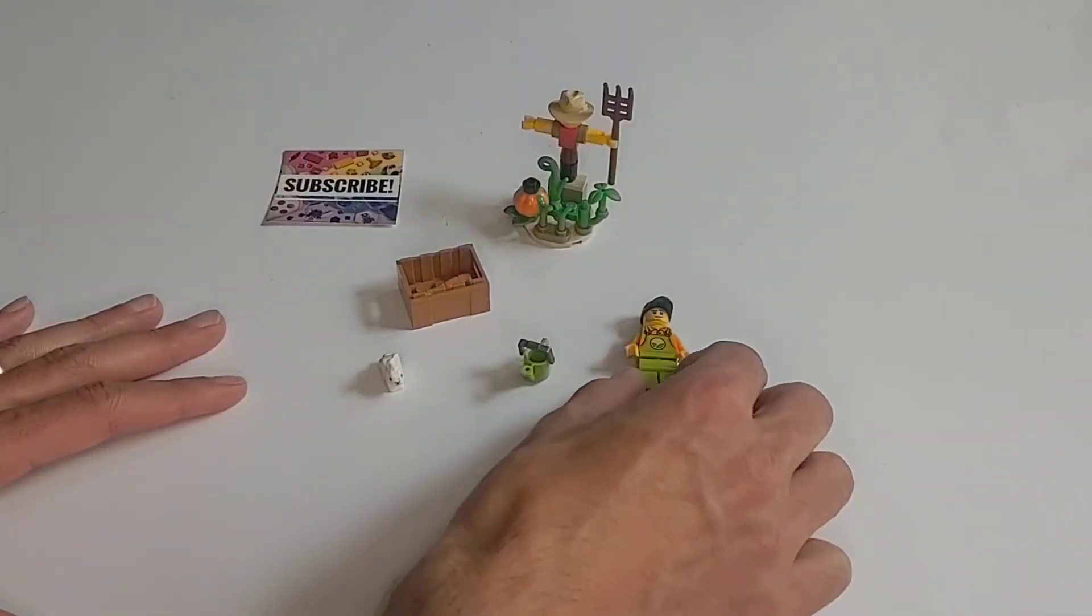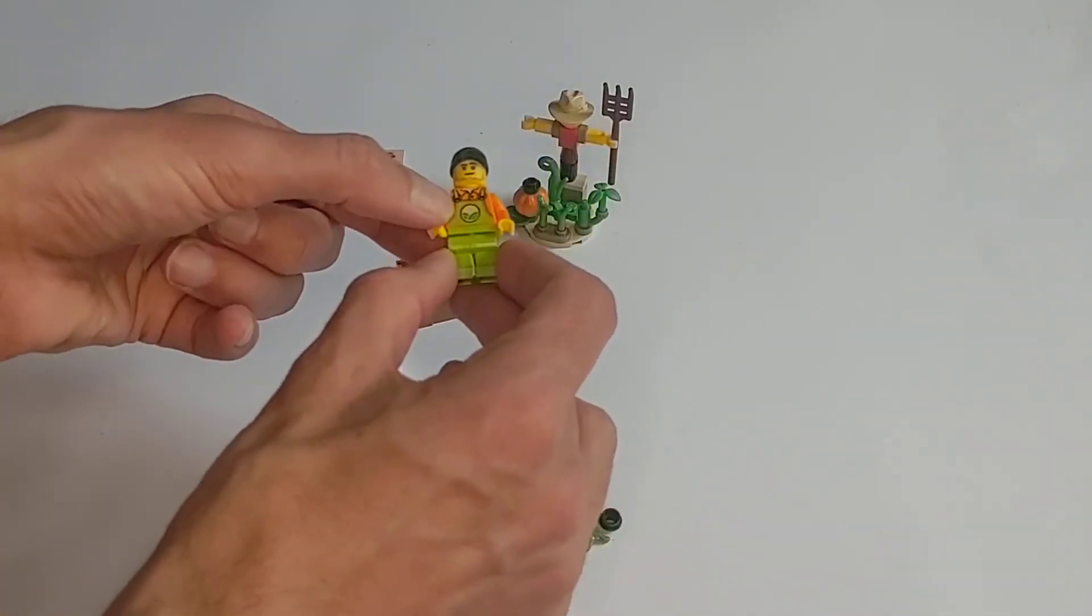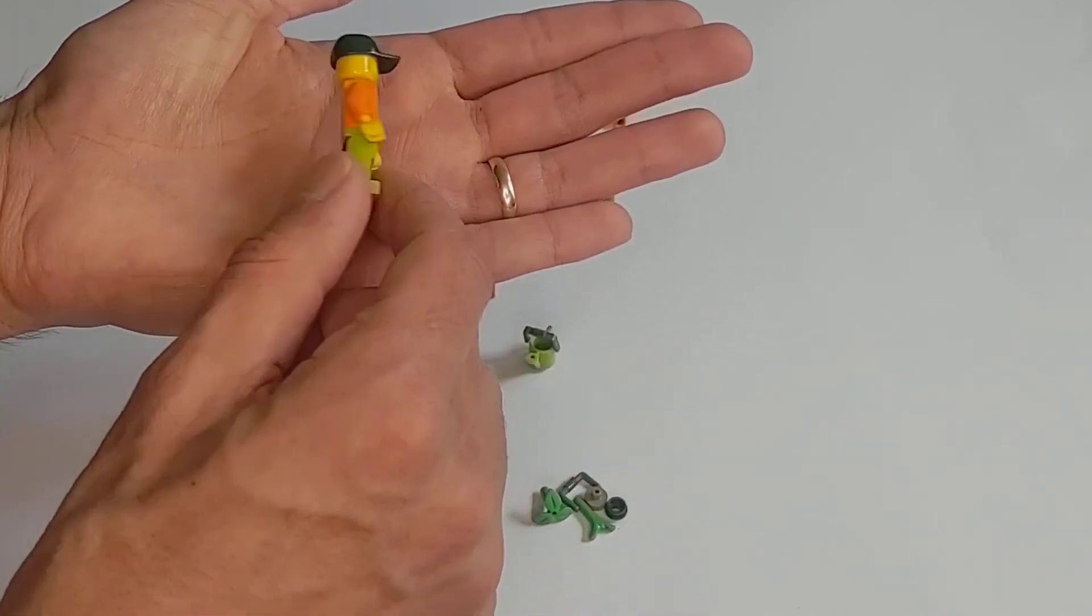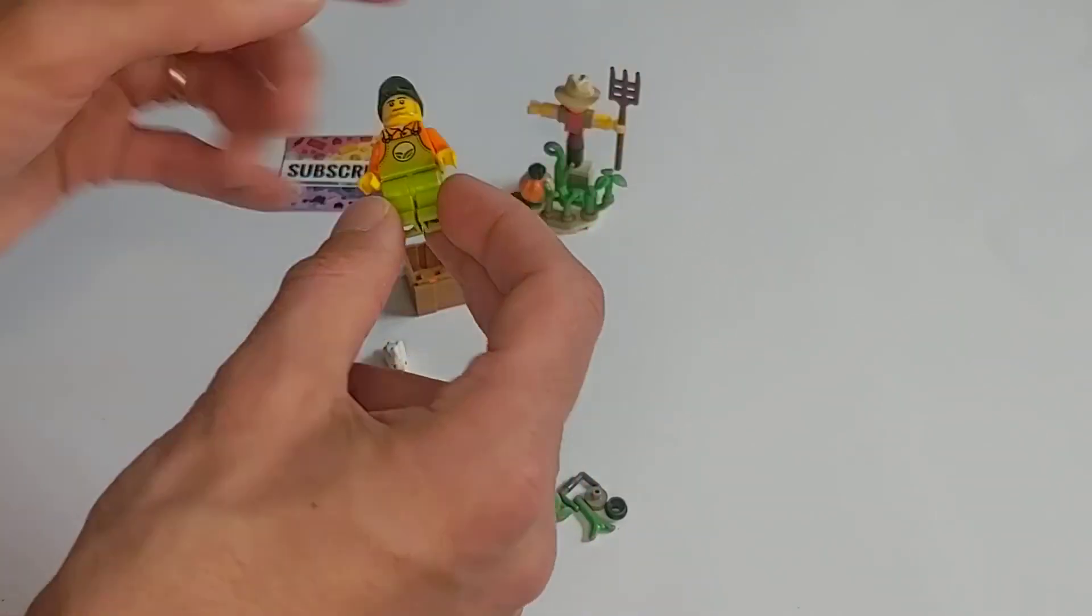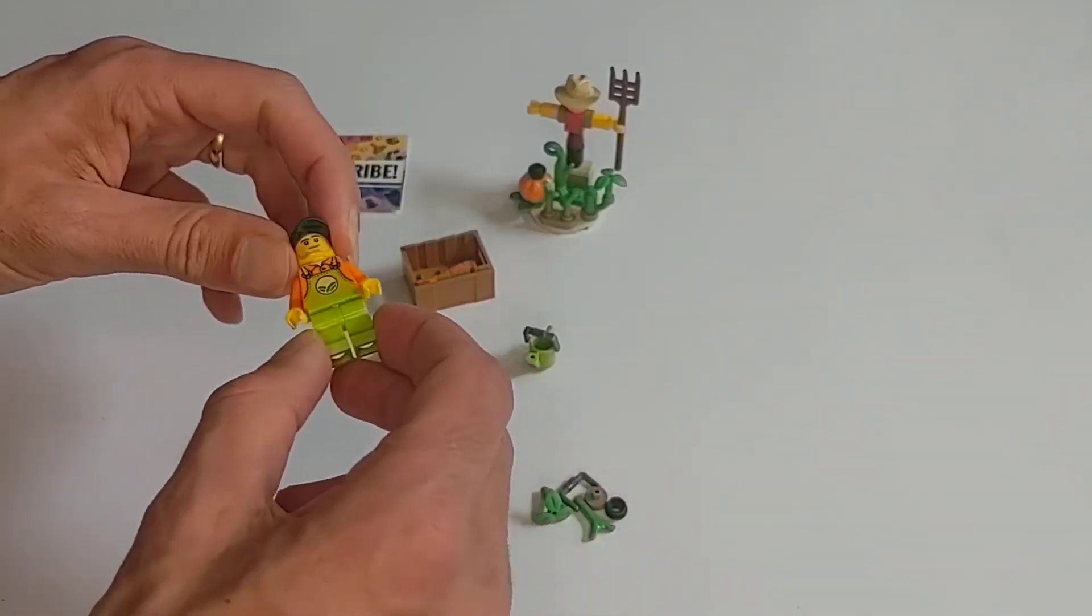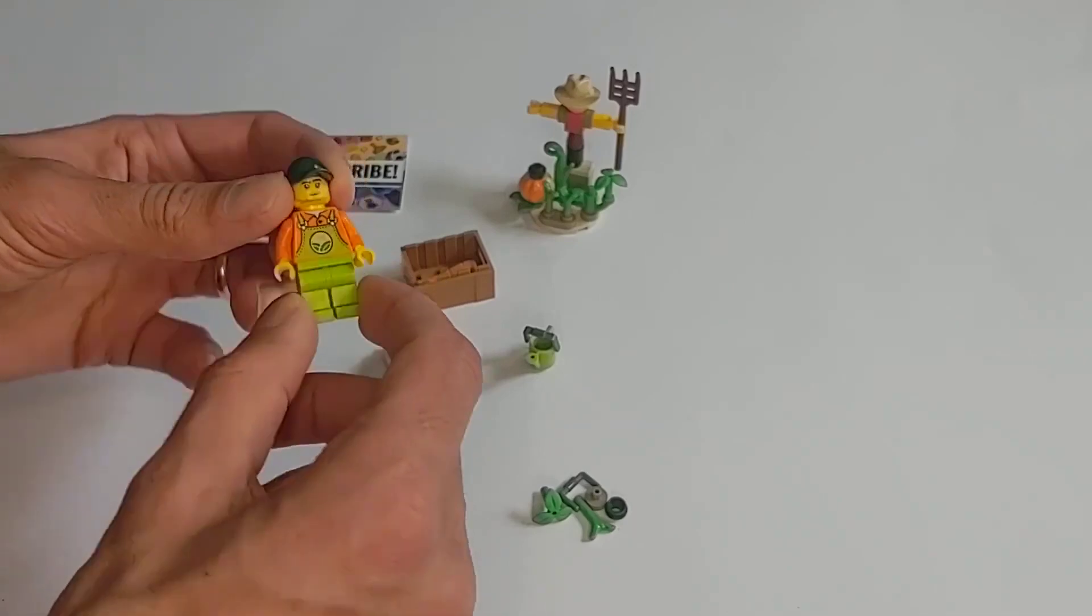Alright, so let's look at the minifigure. It's got this standard farm style torso that they've used in a few sets now. It's the newer style of ball cap, which I guess is not that new at this point, but I thought it was worth mentioning.